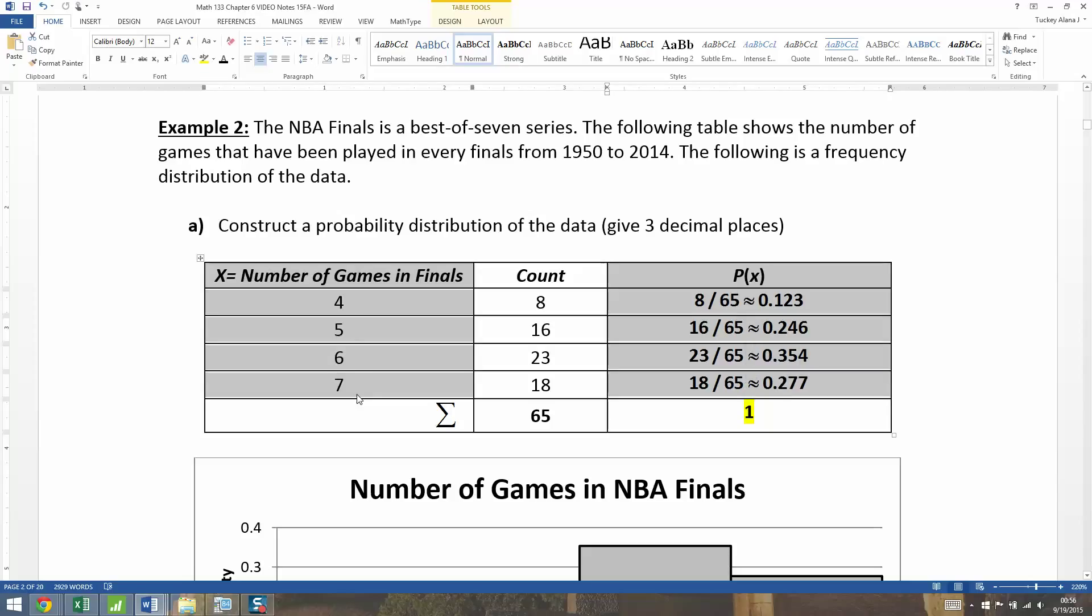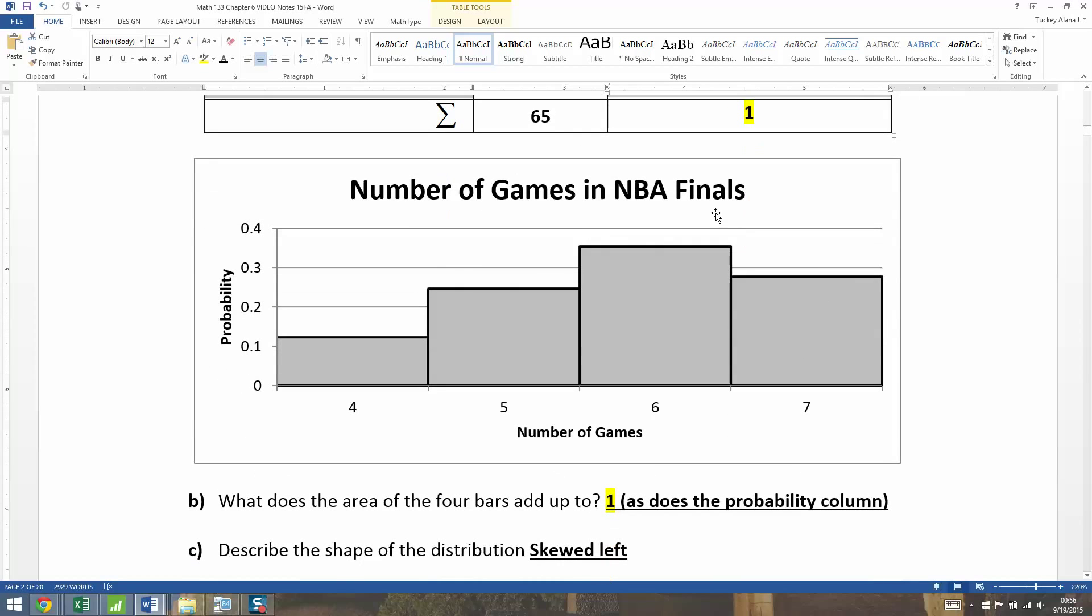Discrete because this is 4, 5, 6, 7, and a probability because we have the probabilities over here. So that's a discrete probability distribution in a table form. Now in a graph form, that would be the histogram. So that's a discrete probability distribution in a histogram.